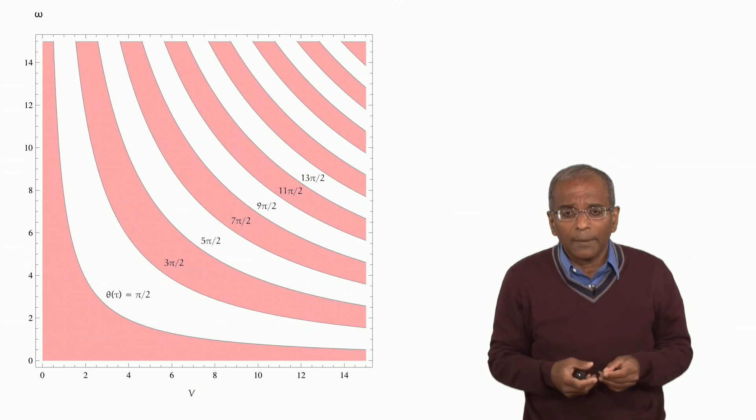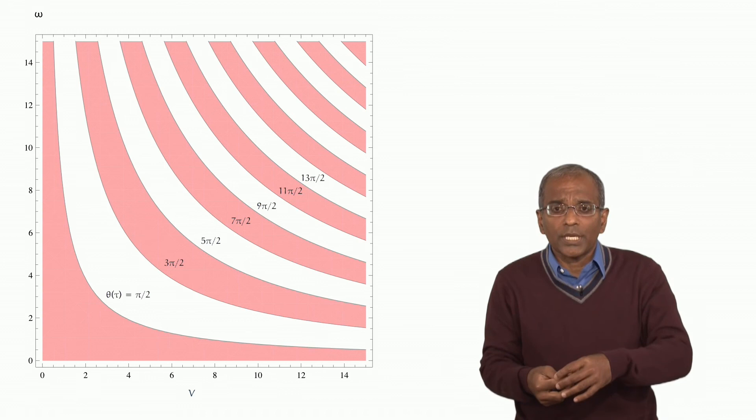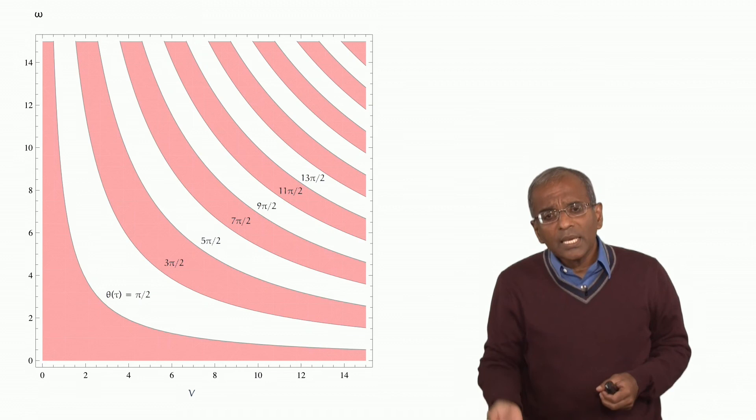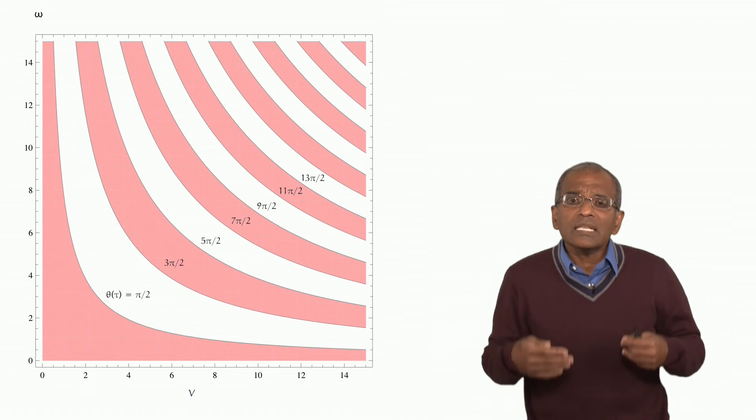Now, measurements of actual coin tosses, when people toss coins like this, will show that the velocity imparted is somewhere typically between 7 to 9 feet per second.